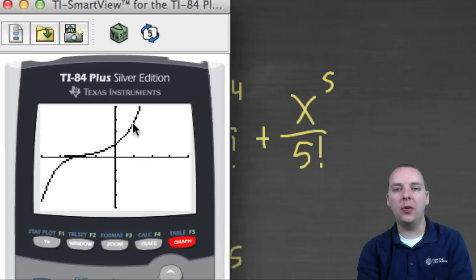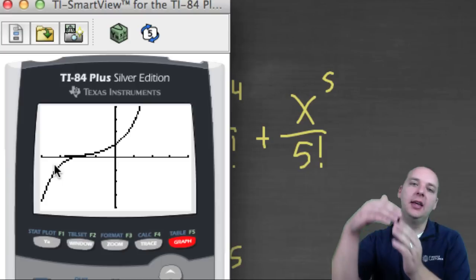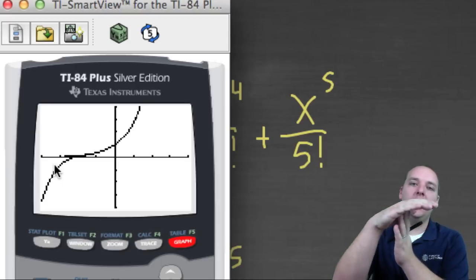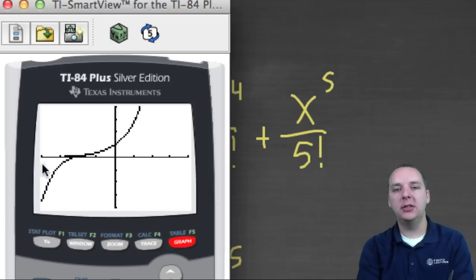Now, does he approximate it well everywhere? No, if you look at the left hand side of the graph you see e to the x goes one way, and my polynomial goes another way, so the approximation is not very good out here, but my goodness around zero these are right on top of each other, it's just a phenomenal approximation.